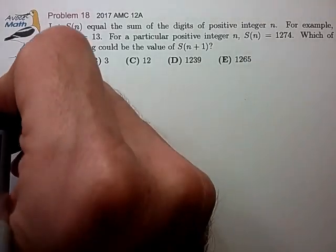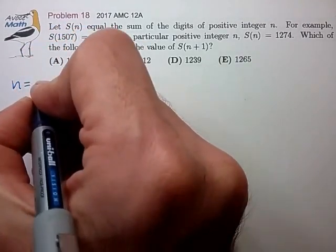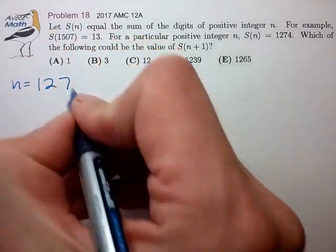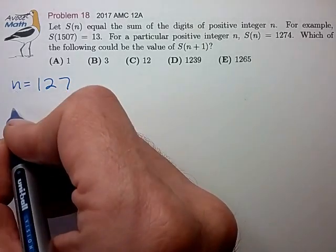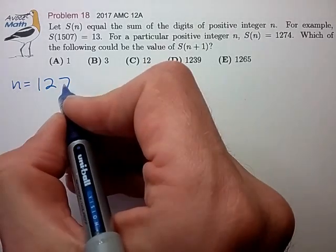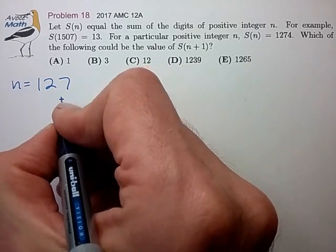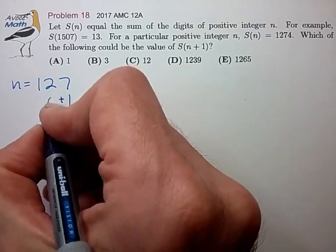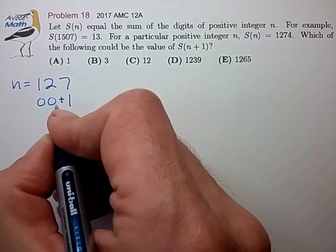So let's try a few numbers to get a feel for this. Let's try a number, say 127, and we go to the n+1 case. The units digit will increase by 1, and the tens and hundreds digits will be unaffected.